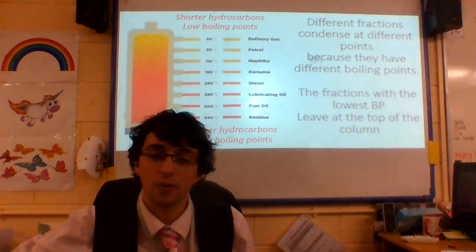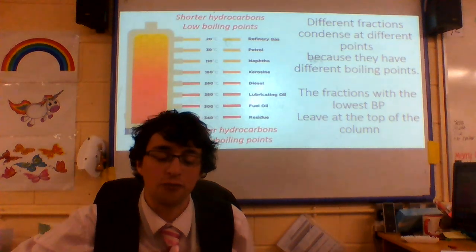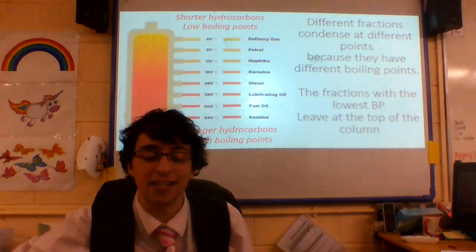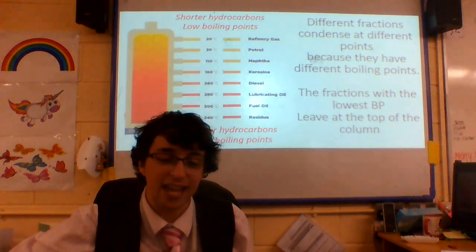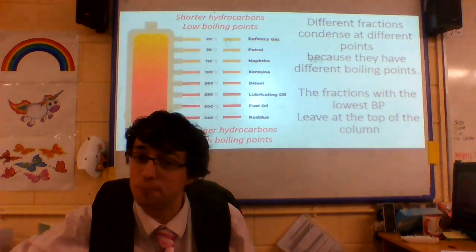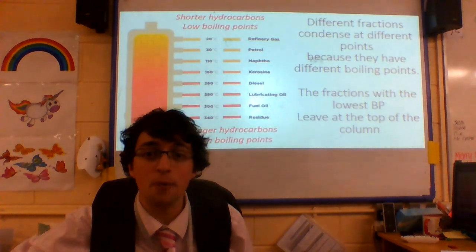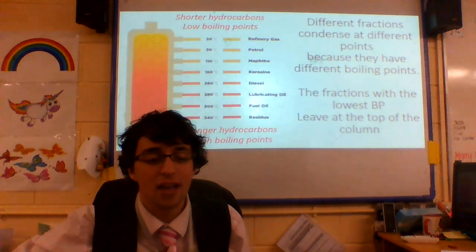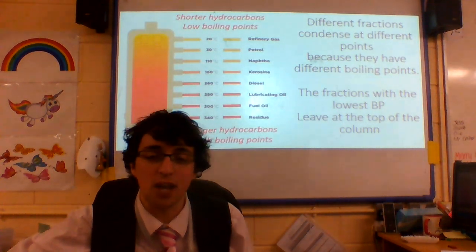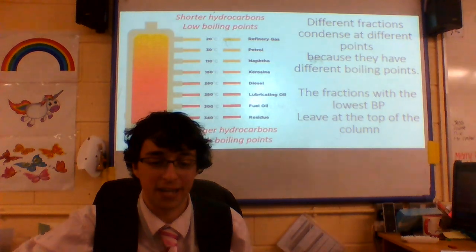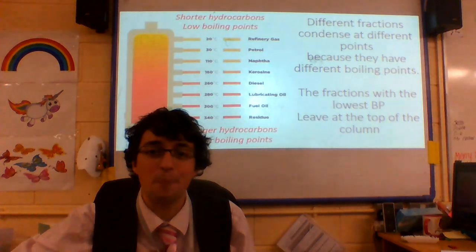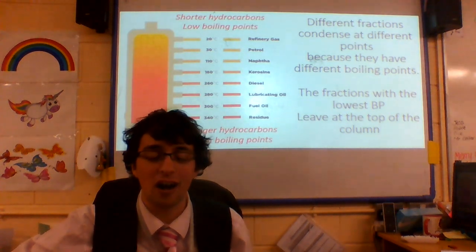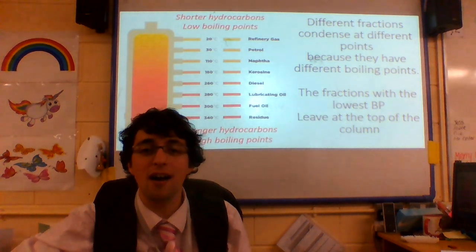Different fractions condense at different points in the column because they have different boiling points. The fractions with a lower boiling point leave at the top of the column.